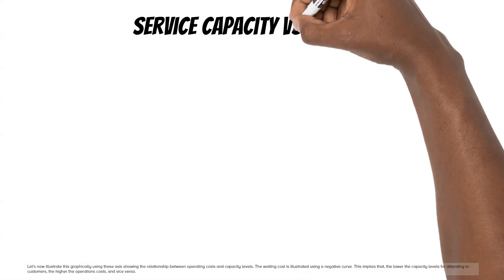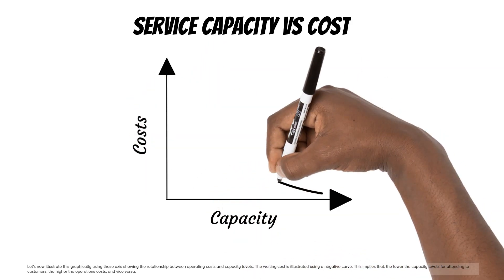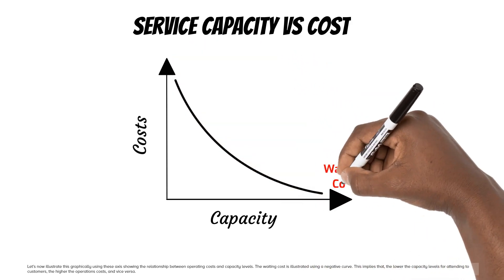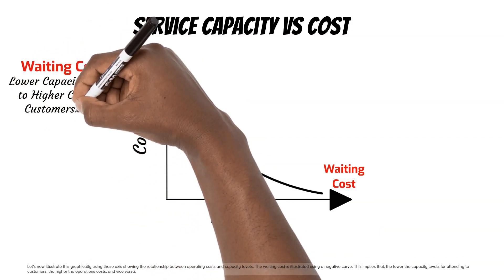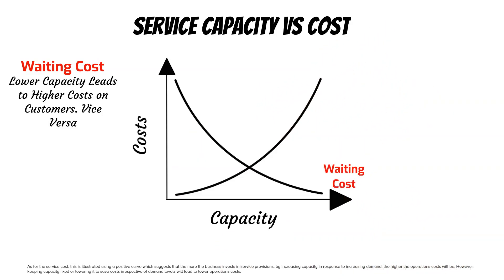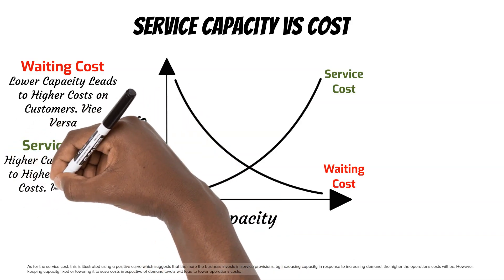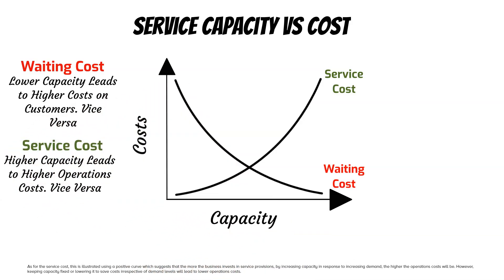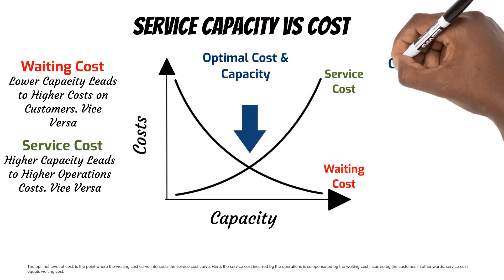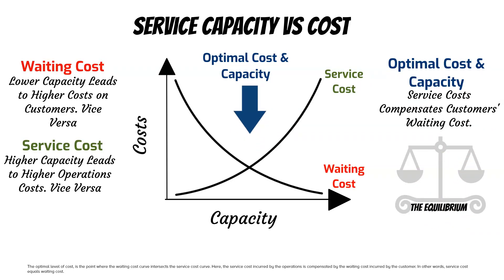Let's now illustrate this graphically using axes that show the relationship between operating costs and capacity levels. The waiting cost is illustrated using a negative curve, implying that the lower the capacity levels for attending to customers, the higher the operations costs, and vice versa. The service cost is illustrated using a positive curve, suggesting that the more the business invests in service provisions by increasing capacity in response to increasing demand, the higher the operations costs will be. However, keeping capacity fixed or lowering it to save costs will lead to lower operations costs. The optimal level of cost is the point where the waiting cost curve intersects the service cost curve — here, service cost equals waiting cost.